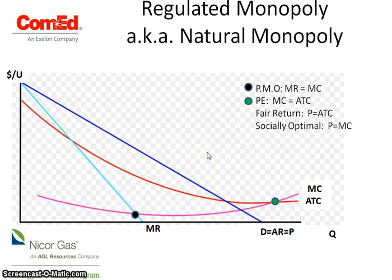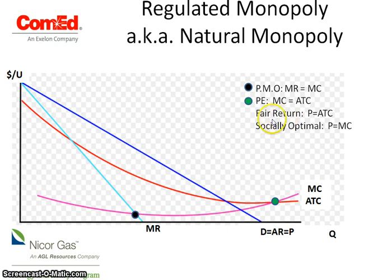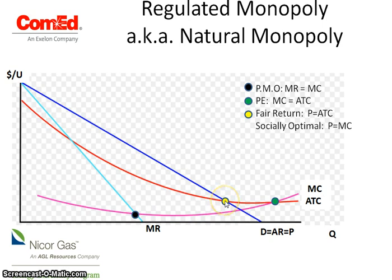The government has two choices, and with each choice there's a tradeoff. You need to recognize what the choice is, the formula for it, and what the tradeoff is. One choice is referred to as the fair return price. The government can tell the company that if you're going to operate, you must charge a price where price equals ATC. That's the same formula as our break-even. It's a fair price because what they're charging is what it costs to produce.